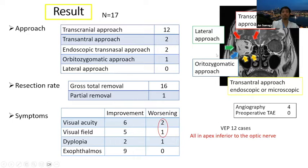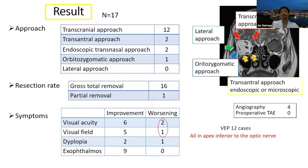In my angioma case summary, the most frequently used approach was transcranial. Sometimes I use trans-antral and endoscopic approaches — especially when the tumor is inferior-medial to the optic nerve, where the endoscopic or trans-antral approach through the maxillary sinus is very suitable. Sometimes I use the orbit-zygomatic approach. Total removal was achieved in all but one case that was severely attached to the optic nerve. Unfortunately, two cases had worsened visual function after surgery — both located in the apex, inferior to the optic nerve. This area is very dangerous.